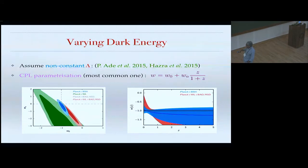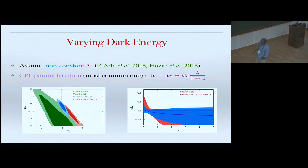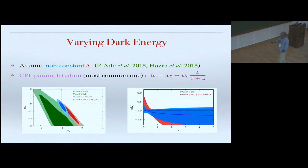Taking this CPL parametrization in the W0-WA plane, the green confidence contours are from Planck plus weak lensing, and the blue from Planck plus external datasets including supernova, baryon acoustic oscillation, and HST data. One can see that W0 equals minus one and WA equals zero is perfectly consistent. Reconstructing W as a function of redshift Z, the W equals minus one constant line sits well within the 68% confidence range. So even with non-constant Lambda parametrization, the cosmological constant is quite consistent.